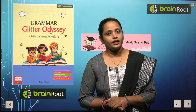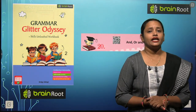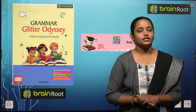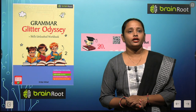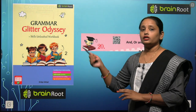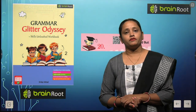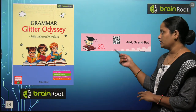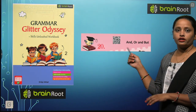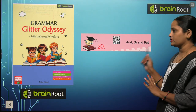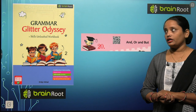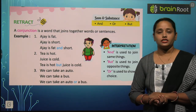Hello my dear kids, welcome back. I am Vandana and we are learning English grammar by Brain Root Series. Here is a book and the name of the book is Grammar Glitcher Odyssey, book 2. Today we will start chapter number 20 and the name of the chapter is 'And, Or and But.' Let's see when and where to use these words.